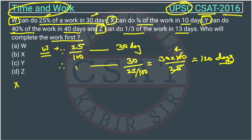Now for X. X can complete 1 by 4 of a work in 10 days. Therefore, he will complete 1 work in 10 upon 1 upon 4 days. So it will be 10 into 4 upon 1. So it will be 40 days.